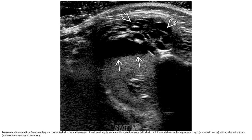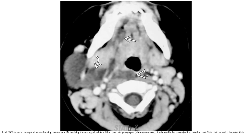Transverse ultrasound in a two-year-old boy who presented with sudden onset of neck swelling, showing lymphatic malformation with a fluid-fluid level in the largest macrocyst, with smaller macrocysts noted entirely. Axial contrast-enhanced CT shows a spatial, transspatial, non-enhancing microcystic lymphatic malformation involving the sublingual, retropharyngeal, and submandibular spaces.